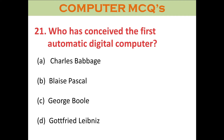Question twenty-one: Who conceived the first automatic digital computer? A. Charles Babbage. B. Blaise Pascal. C. George Boole. D. Gottfried Leibniz. The right answer is A: Charles Babbage.